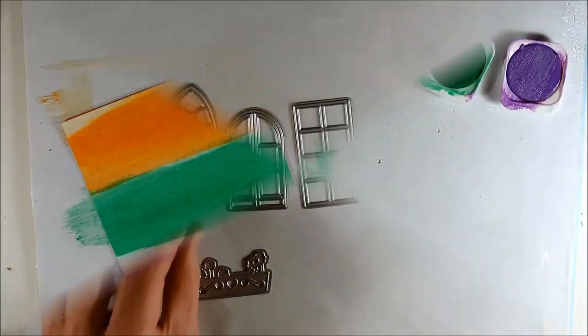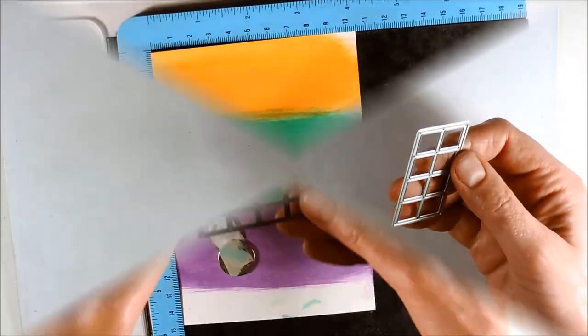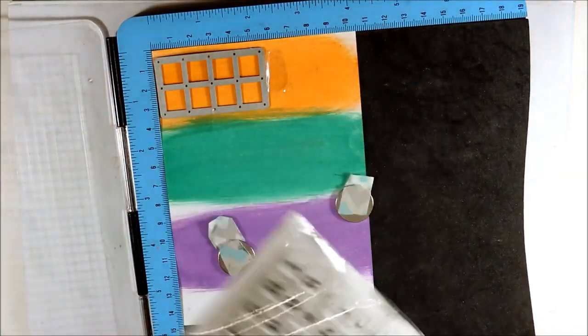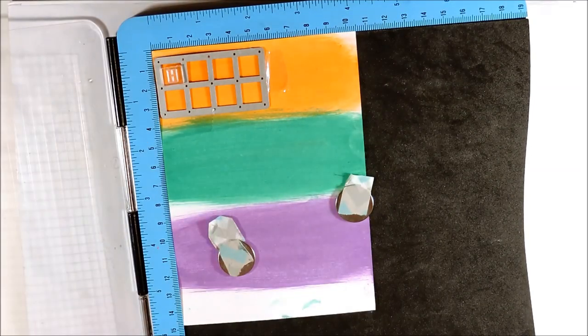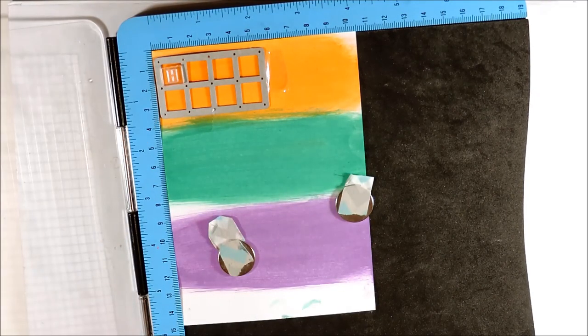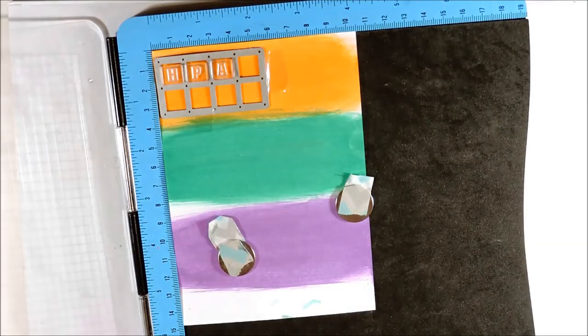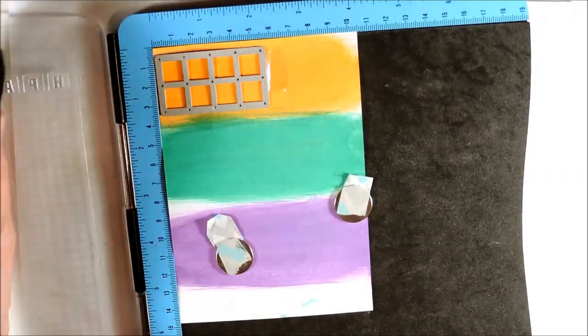To create my sentiment I am using this window die, which I am fixing on top of my colored index card in the orange part. I am using this stamp set and now I am positioning the stamps inside the window die, and I am stamping each third letter of my sentiment.